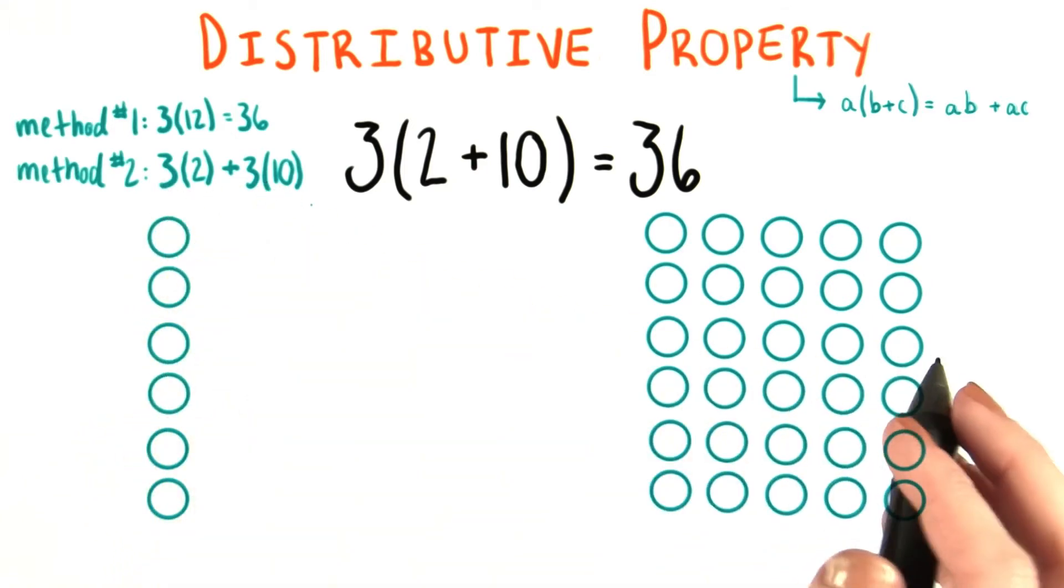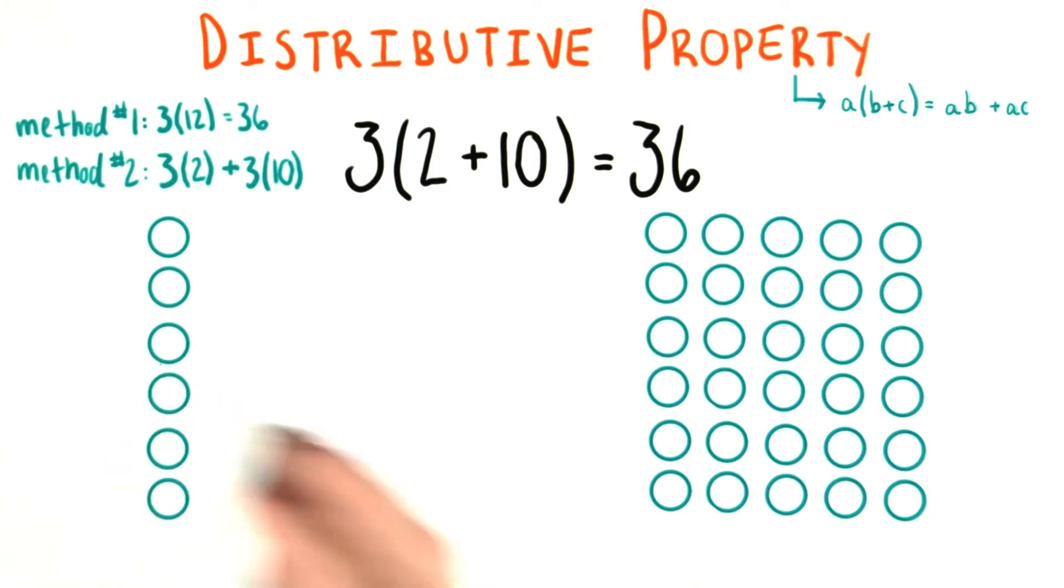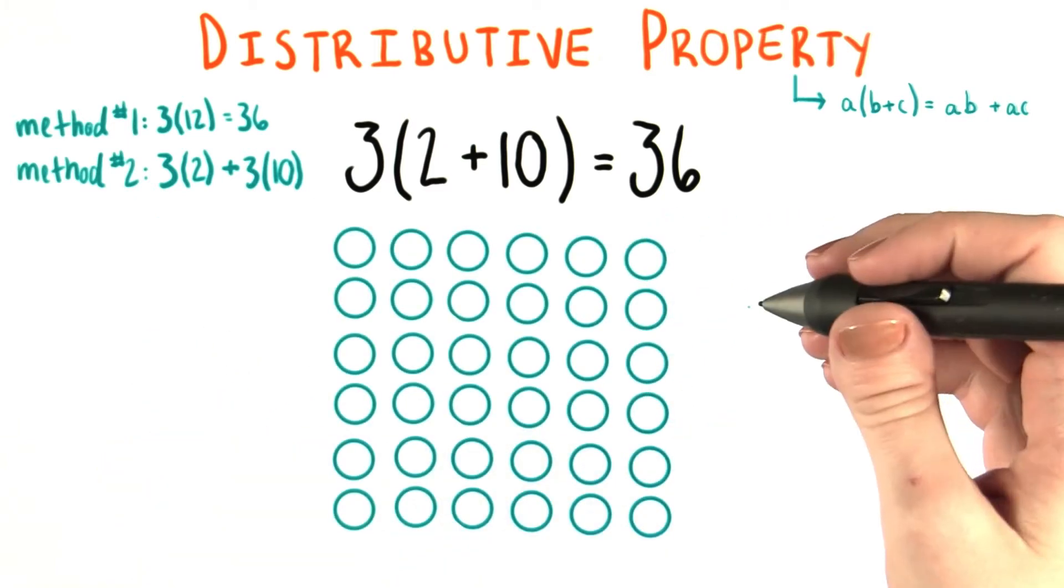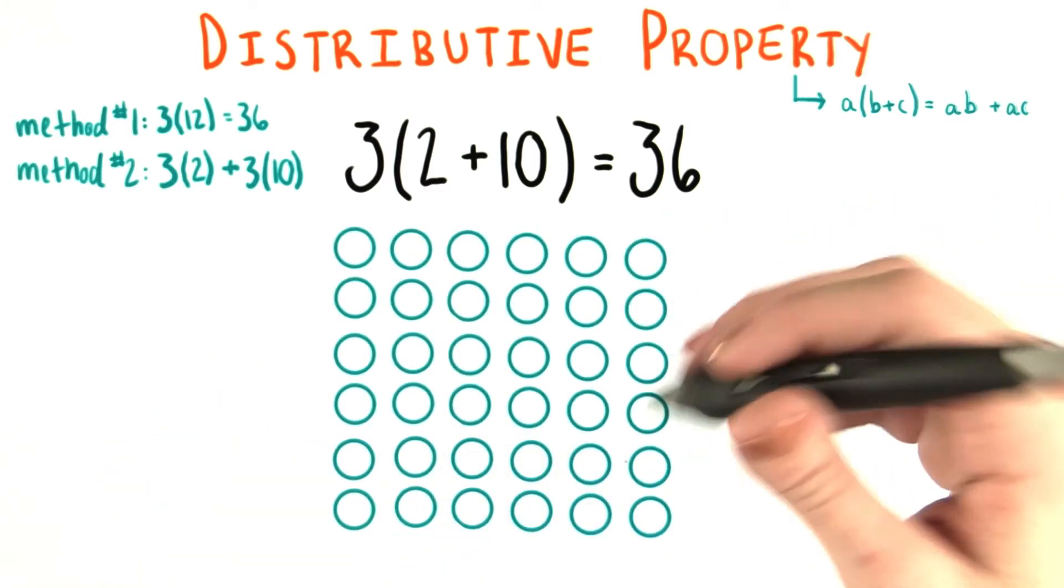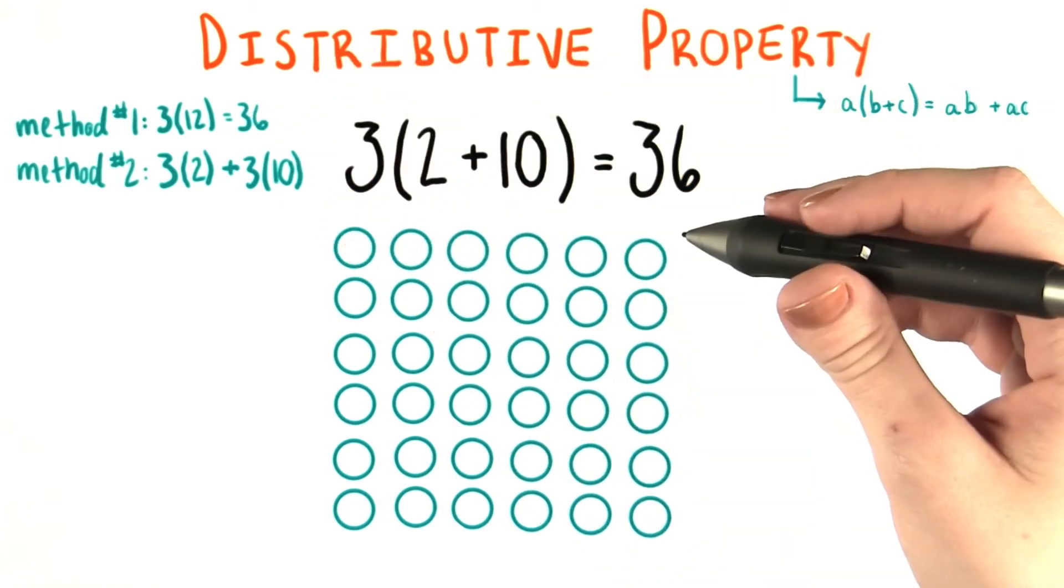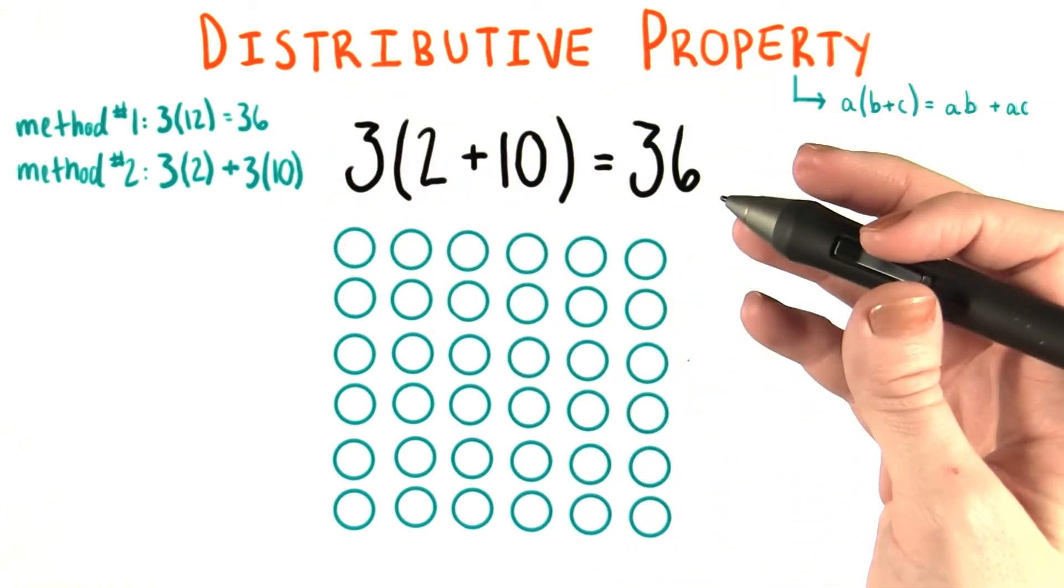And then I want to add those 2 groups together. So we need to merge this set of circles with this set of circles. And we end up with the exact same picture that we got using the first method. Once again, we have 36 circles, all in one group.